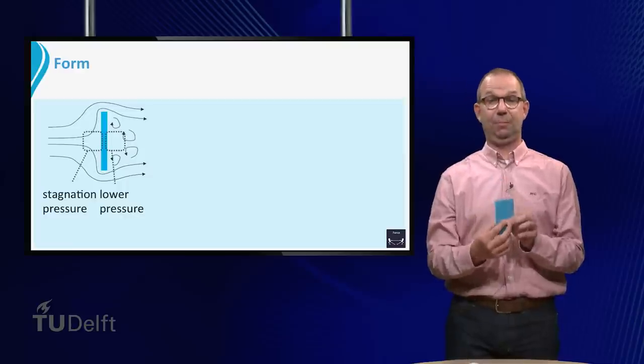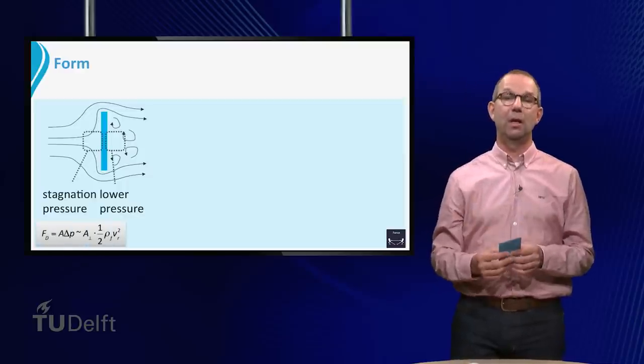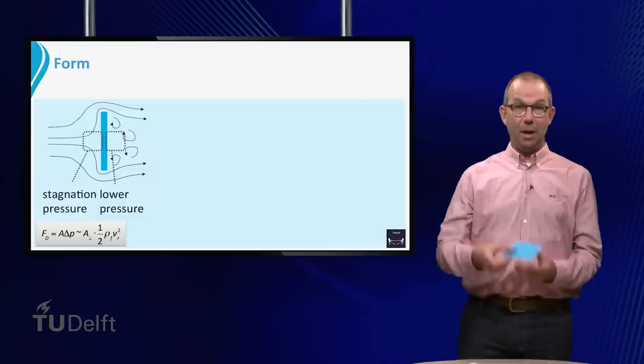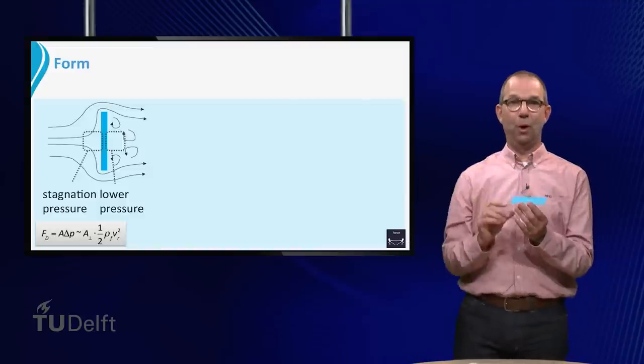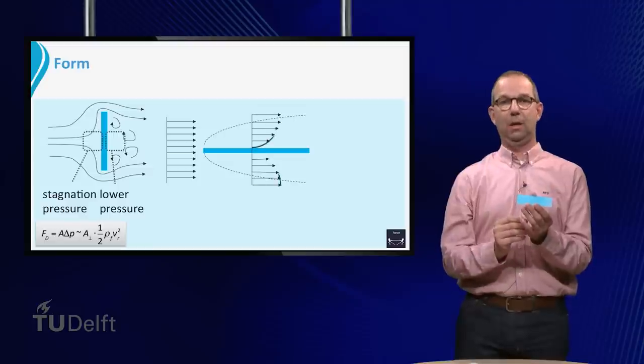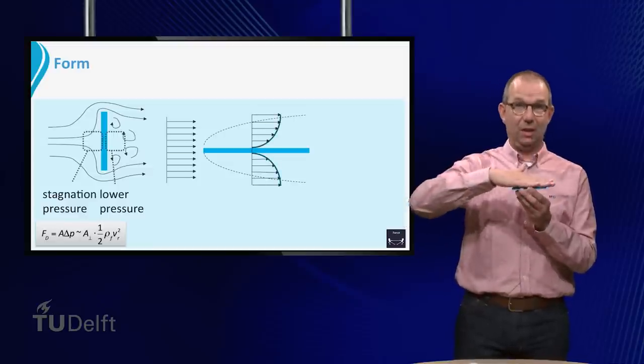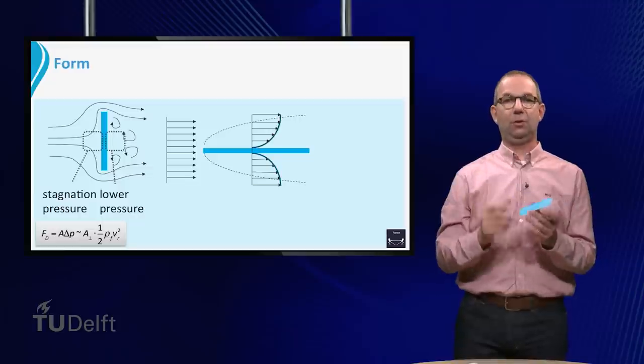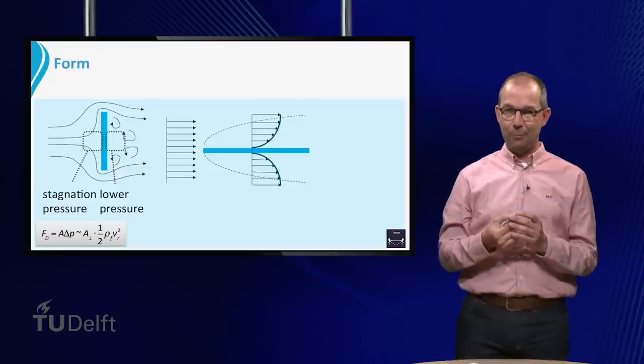The pressure difference can be estimated via Bernoulli's law. Delta p is about half rho v squared. If the plate is parallel to the flow, there is hardly any perpendicular area for the fluid to push on. Now it is friction at the wall that drags the plate to the right. The fluid at the surface of the plate has the same velocity as the plate,